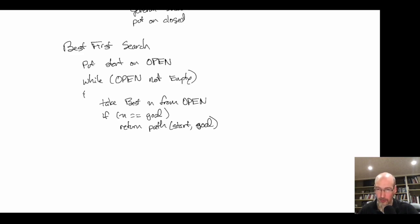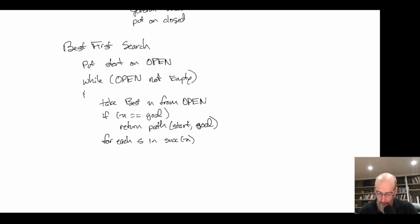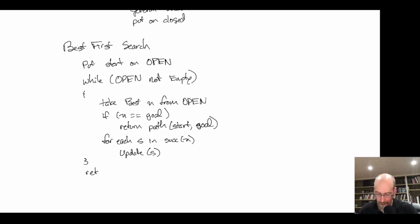If we don't have the goal, we continue the search. For each s in the successors of n, we generate the children and call an update procedure — update(s) — which handles expanding the node and checking if it's already been expanded. If we ever reach the bottom of the loop with an empty open list, we return that there is no path.